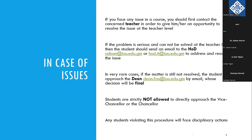If you still feel the issue was not resolved at the HOD level, you are also allowed to contact the dean of the faculty at dean.fas@iu.edu.gm. However, I have been running these programs for about seven years now, alhamdulillah, and so far there was not even one single occurrence where a student had to contact the dean. So inshallah, I hope issues will be resolved at the teacher or HOD level. Students are not allowed to contact the vice chancellor or the chancellor of the university — if you try to do that, there can be disciplinary actions.